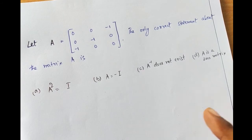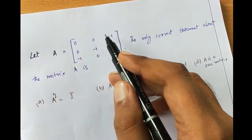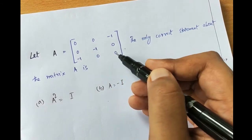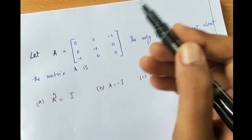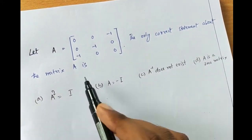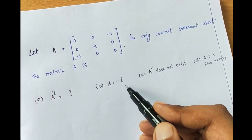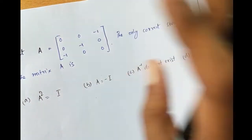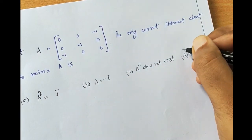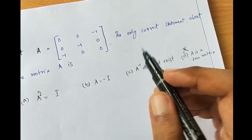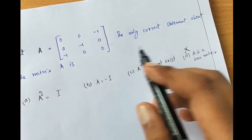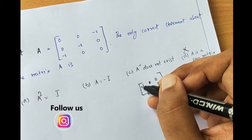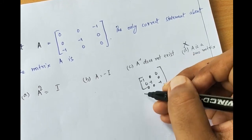The fourth question is a matrix question. A matrix has been given that is very similar to an identity matrix but not exactly — it has minus 1, minus 1, and minus 1 on the anti-diagonal instead of the main diagonal. We need to check whether a squared equals I, a equals minus I, a inverse does not exist, or a is a zero matrix. A is never a zero matrix — elements are clearly present. A equals minus I is also not possible, since minus I has minus 1 on the main diagonal, not the anti-diagonal.